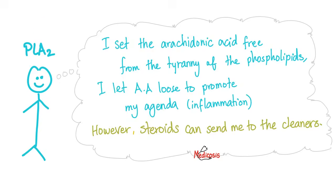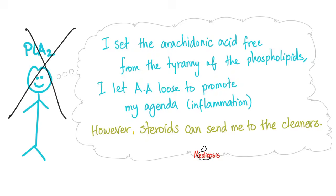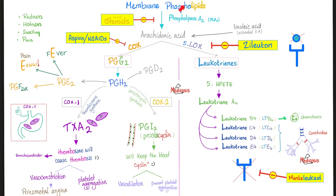Now let's talk about phospholipase A2 enzyme. The enzyme liberates the arachidonic acid free from the membrane phospholipids — freeing arachidonic acid to promote its agenda of inflammation. However, corticosteroids or glucocorticoids can inhibit phospholipase A2. And therefore, corticosteroids inhibit the formation of arachidonic acid. And that's why corticosteroids are anti-inflammatory. Starting with the membrane phospholipids, phospholipase A2 enzyme is going to liberate the arachidonic acid from the tyranny of the membrane phospholipids.